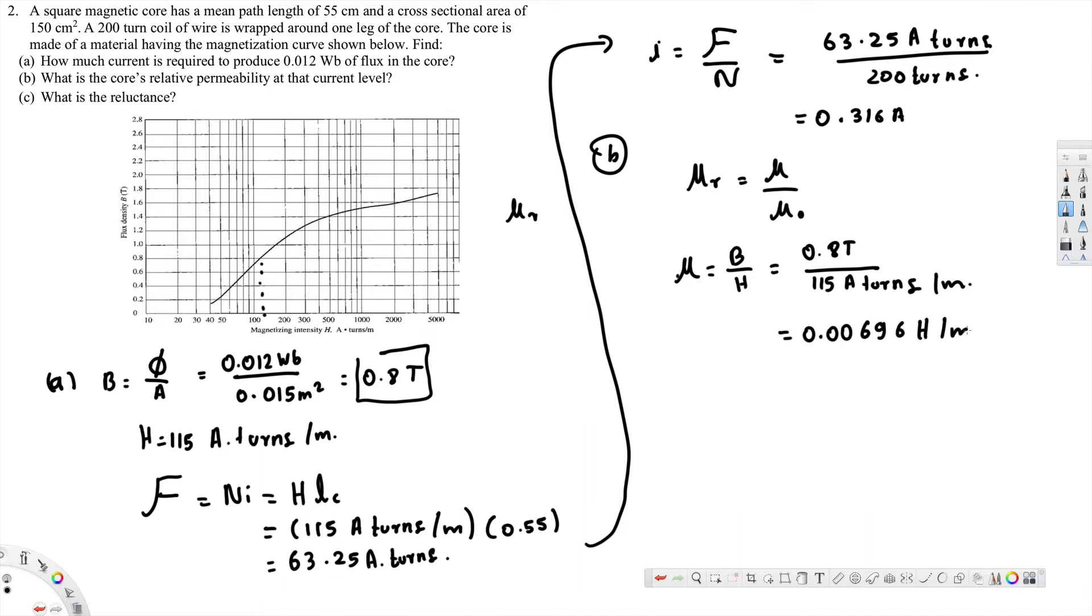Now mu_r is relative permeability, that is equivalent to mu over mu naught. Mu is 0.00696 henrys per meter divided by mu naught, that is 4π times 10 to the power minus 7 henrys per meter. That gives us 5540. This is part B.